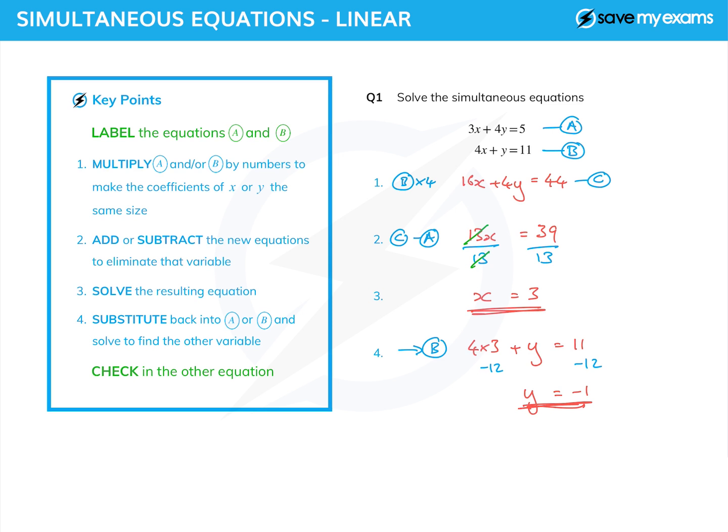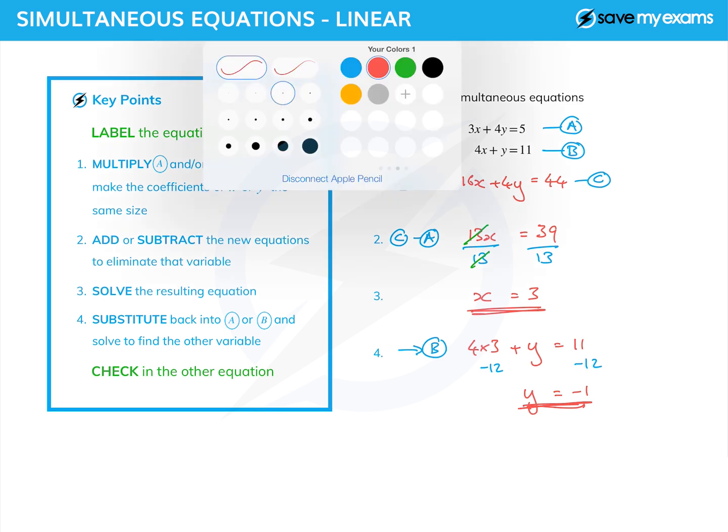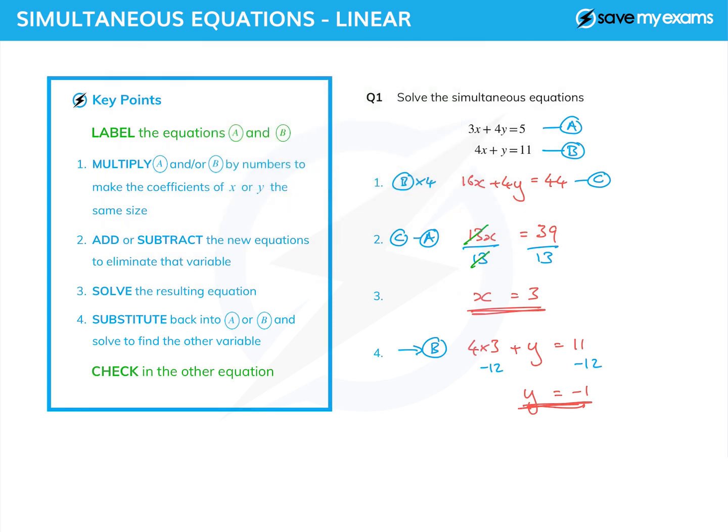Now, I did say we could check in the other equation. So I'm going to do that. I'm going to do it in green. I'm going to say check in. Well, which is the other equation? I've just used B. So I need to check in A. And 3 times x, so 3 times 3, plus 4 times minus 1. Well, 3 times 3 is 9. 4 times minus 1 is minus 4. And 9 minus 4 is 5. So it works. And I know, therefore, that I've got the right answer.